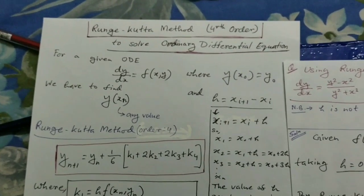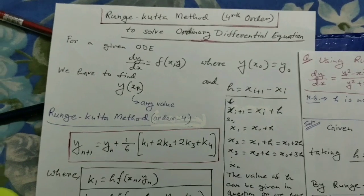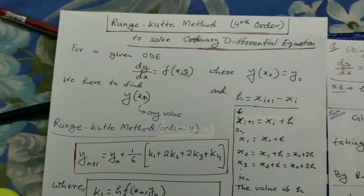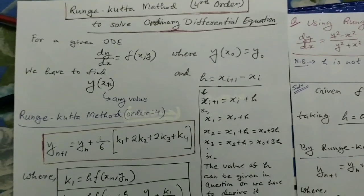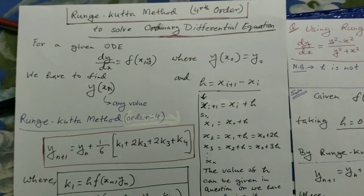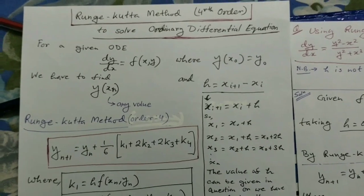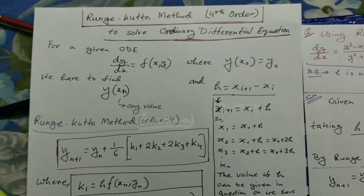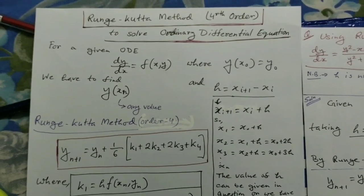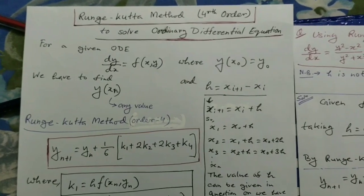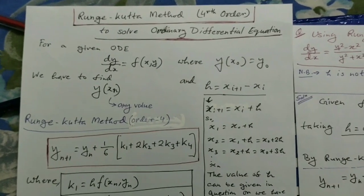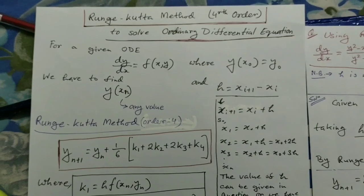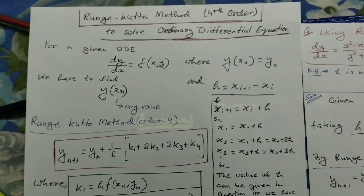This is the complete solution for the given ODE using the Runge-Kutta method of order 4. We have derived the values of y₁ and y₂. If you have any queries, please comment in the comment section and I will try my best to answer. Please subscribe to the channel for more videos and notifications. Thank you.